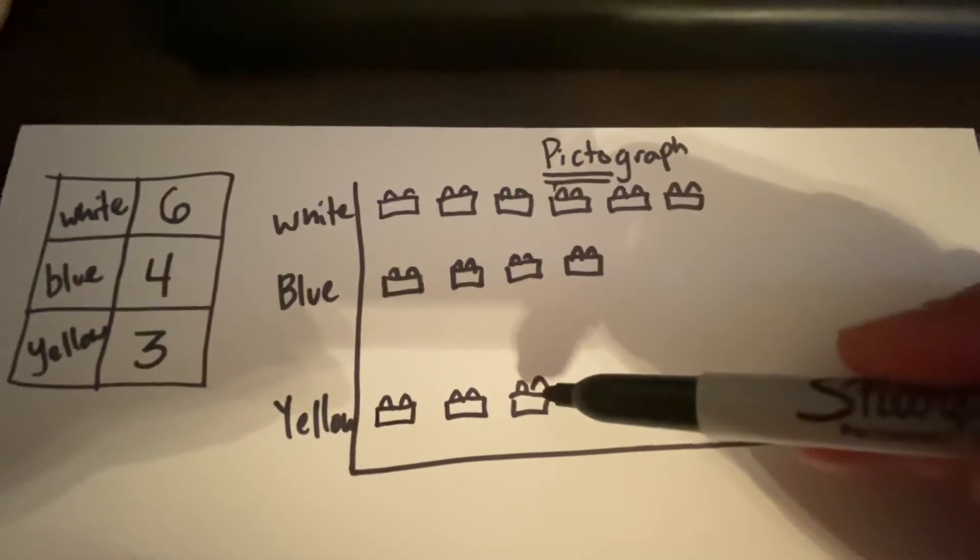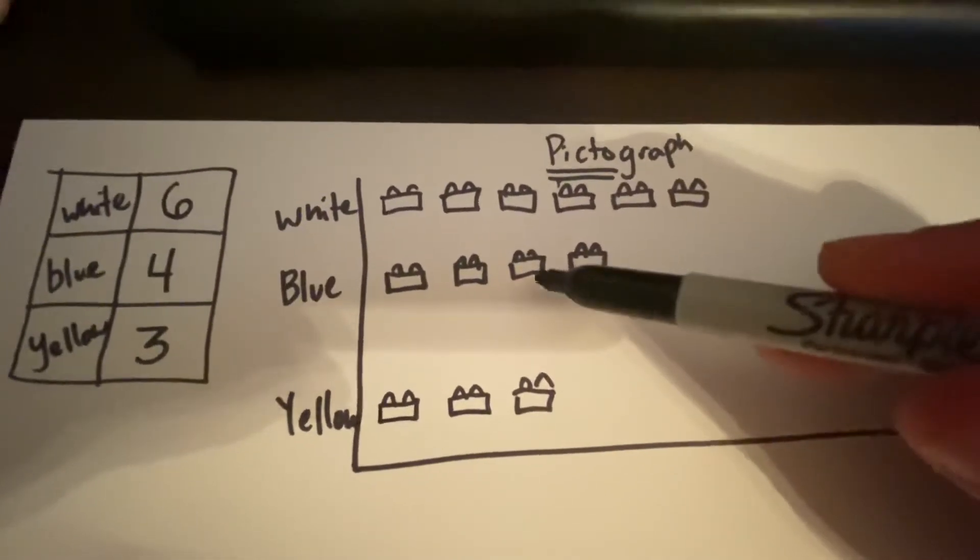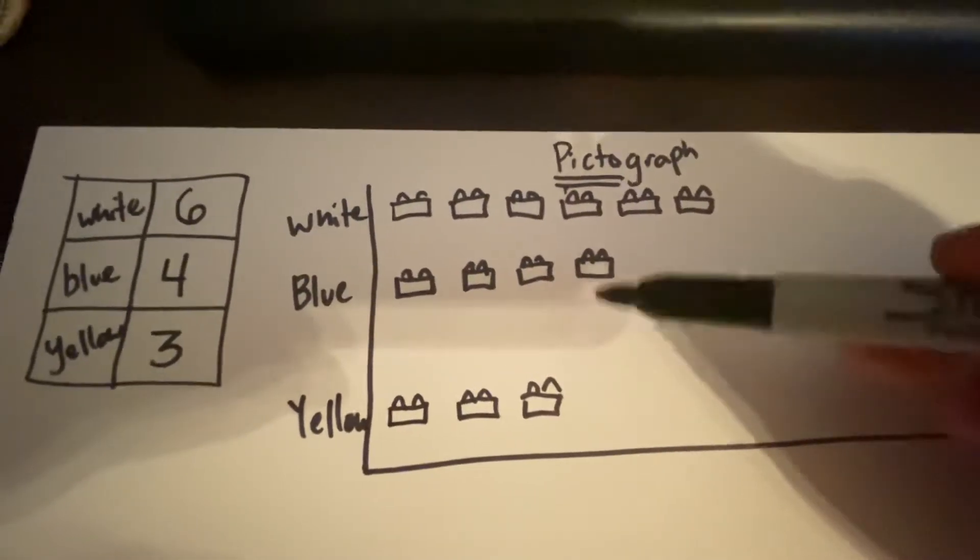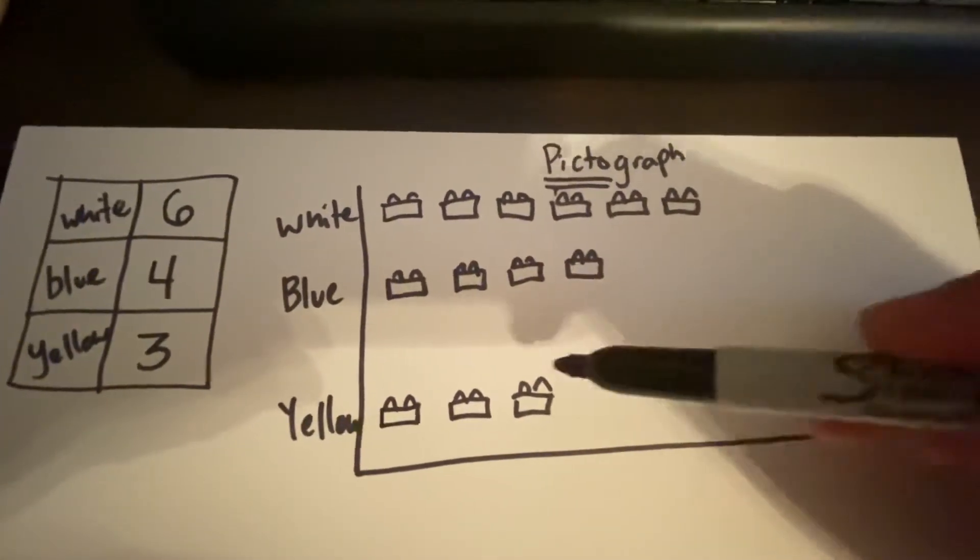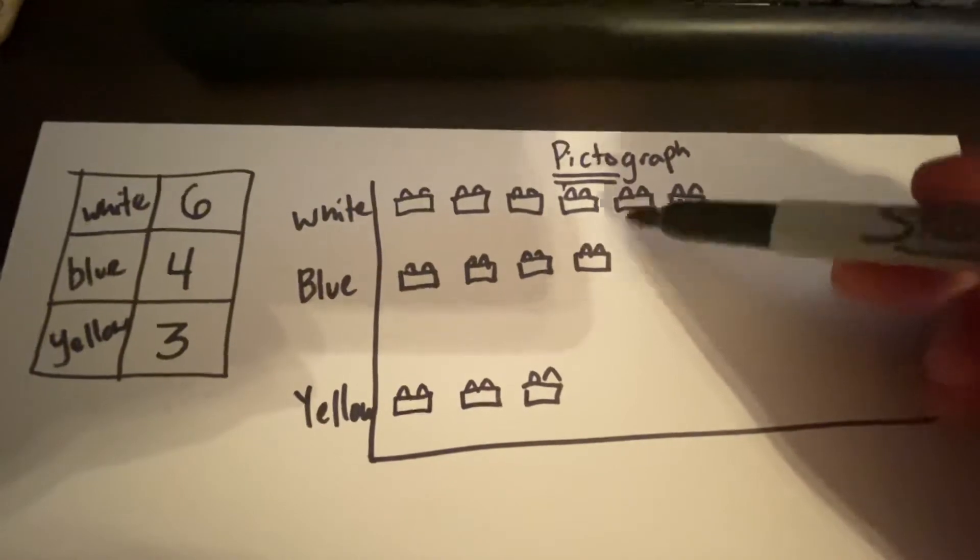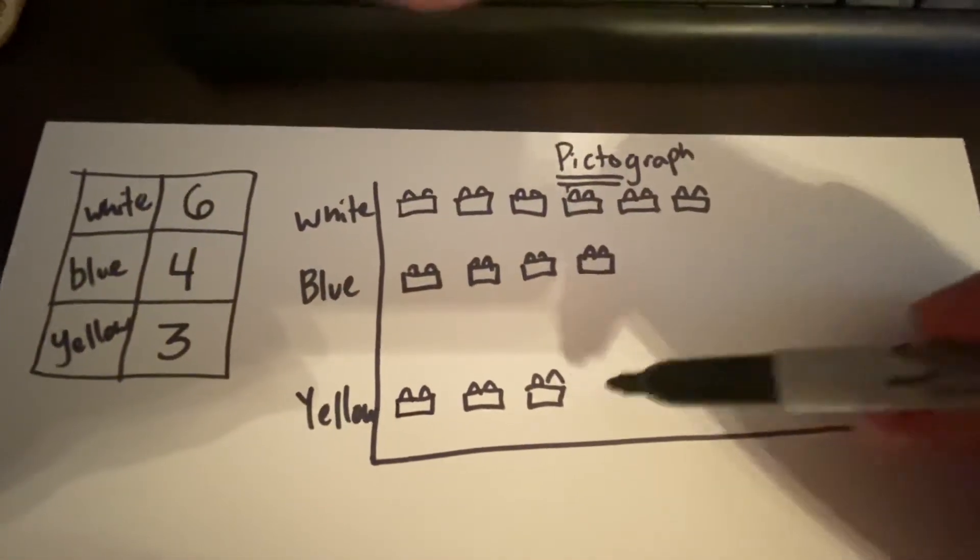What's the difference between the blue and the yellow? Difference. Remember, anytime we ask that question it's a subtraction problem. Four, take away three. There's one more blue. And then I could ask a question like how many there are all together? Six plus four plus three would be 13 altogether.